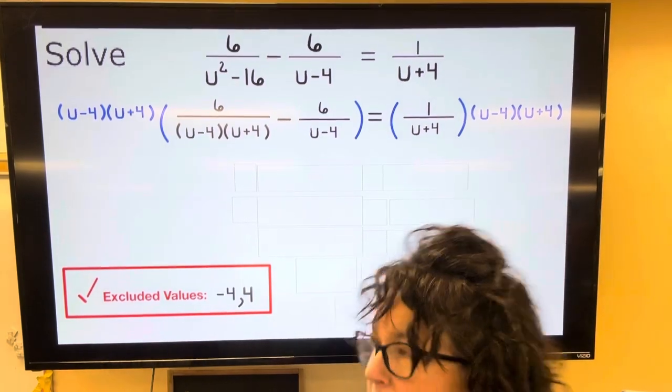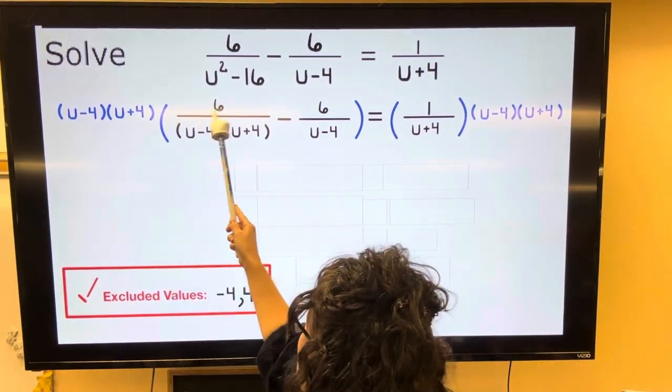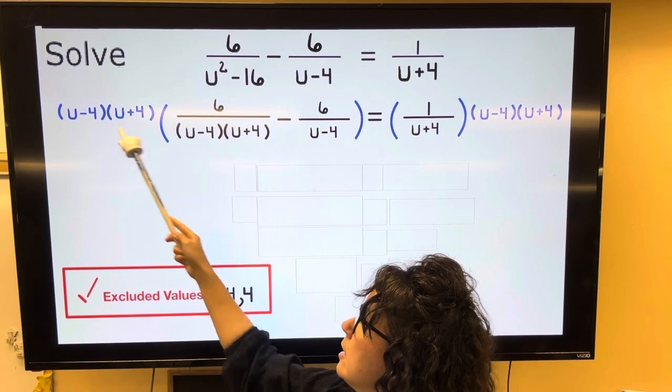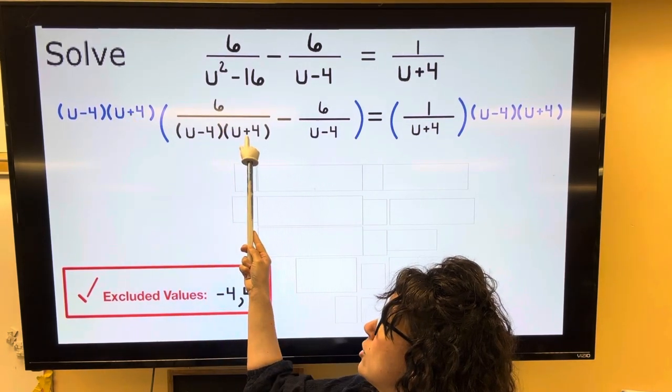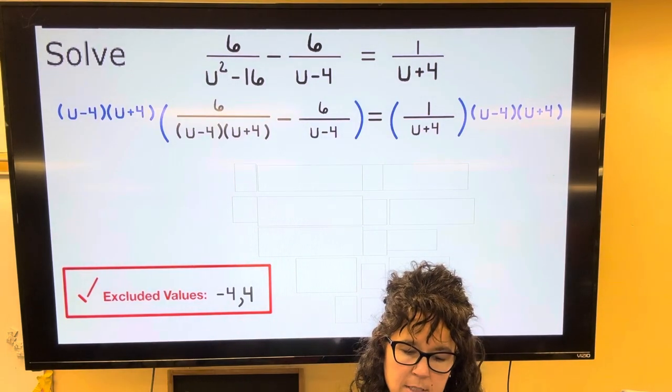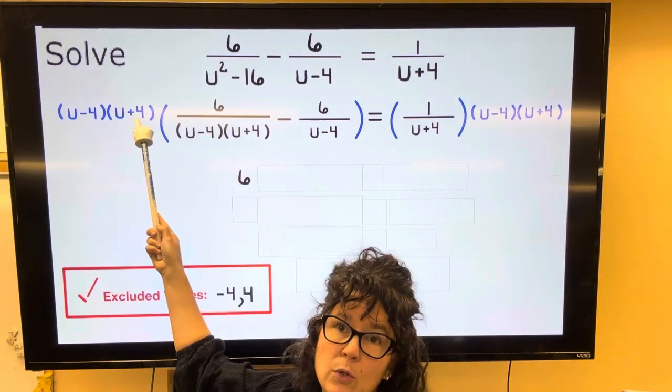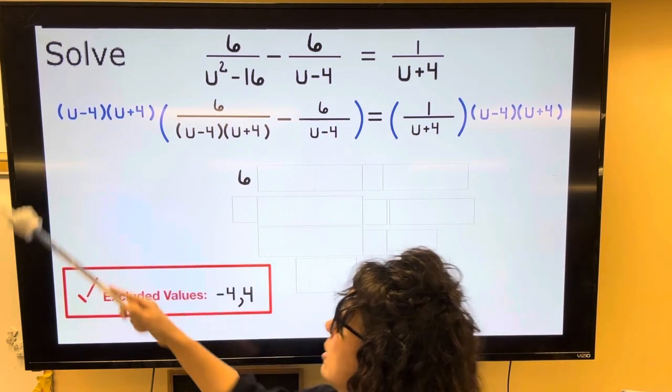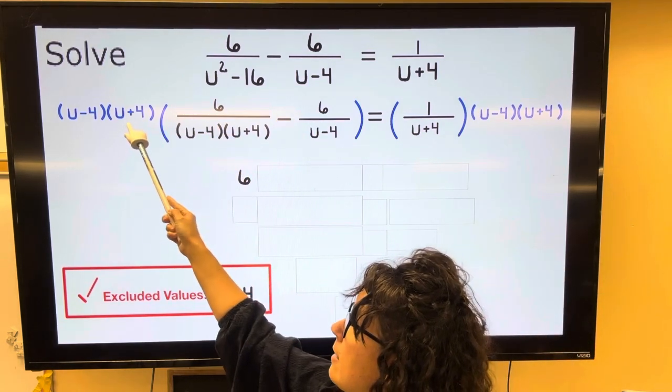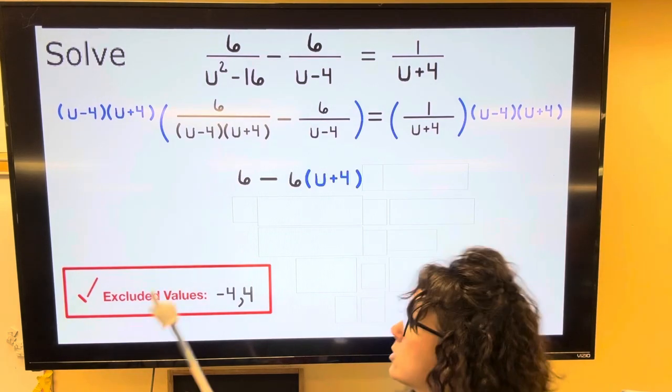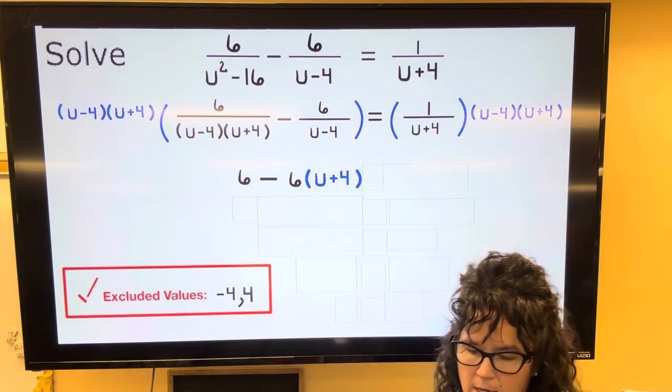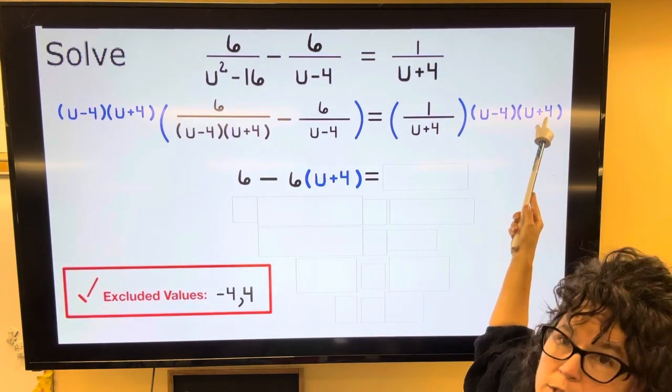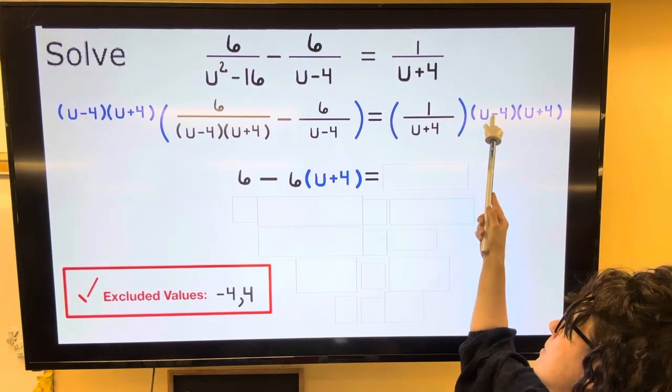When I multiply this blue, I'm going to need to distribute that through. So if I multiply the blue times the first fraction, both of these pieces cancel with these two pieces and the only thing left is the number 6. When I take the blue multiplied by the second fraction, the U minus 4s cancel. So I'm going to have negative 6 and I will still have a U plus 4. Okay, so negative 6 times U plus 4 equals. And then on the right side, when I multiply the U plus 4s cancel and I'm left with 1 times U minus 4.